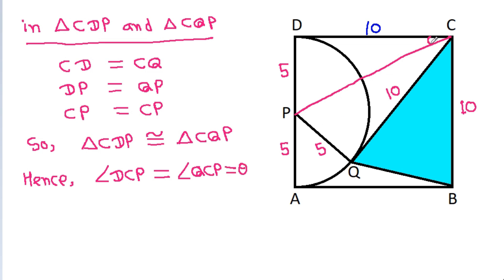So this angle is theta, and this angle is theta. Therefore, angle DCQ — the full angle at C — equals 2 theta, and the remaining angle at B, which is angle QCB, equals 90 degrees minus 2 theta.